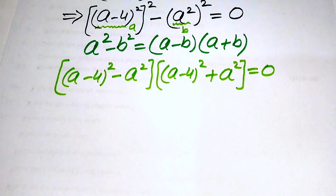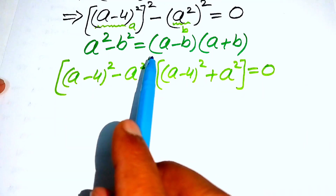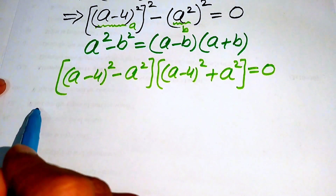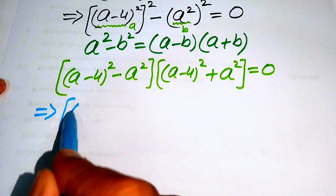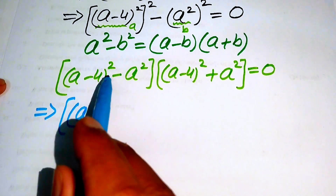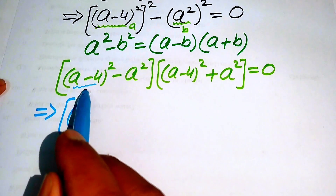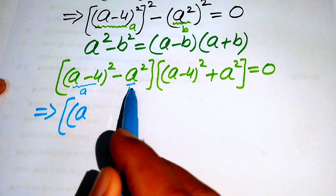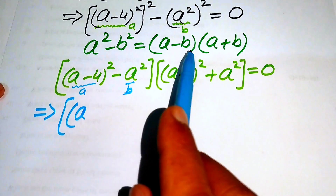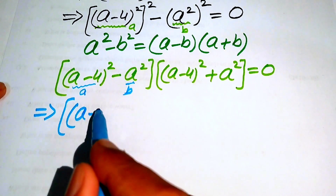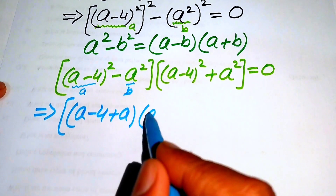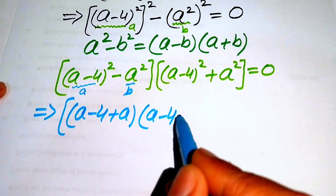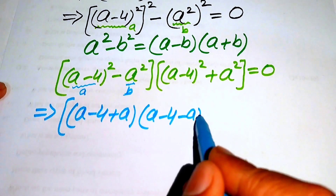We apply the same difference of squares identity again on the first factor, writing it as [(a - 4) - a] × [(a - 4) + a], giving us (2a - 4) × (-4).